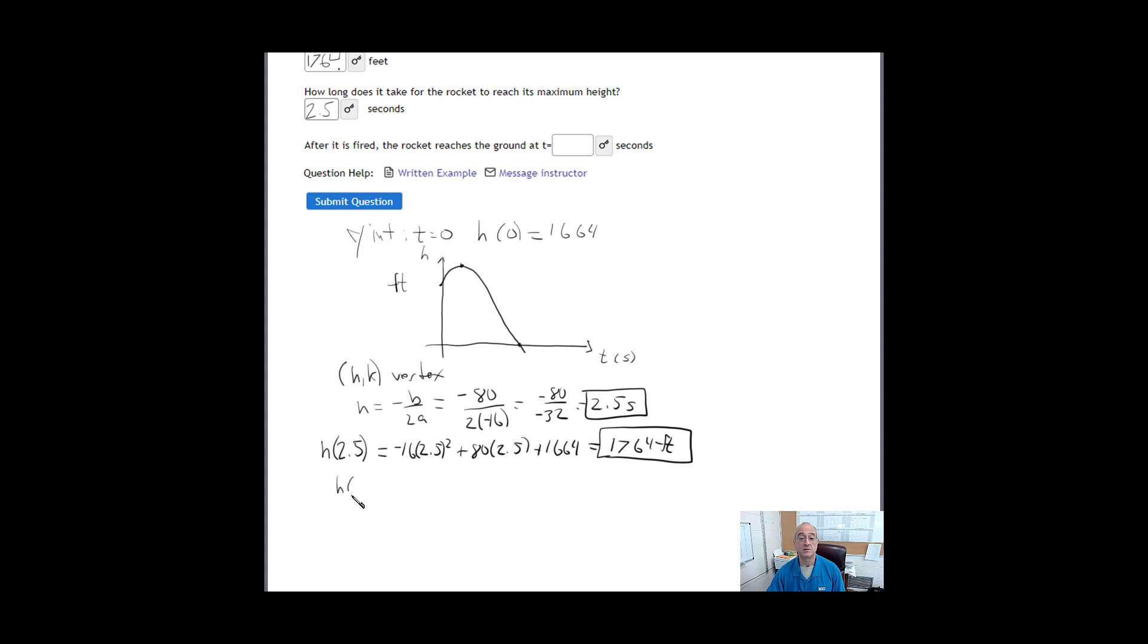So to find the x intercept, we set the function h of t equal to 0. So in other words, negative 16t squared plus 80t plus 1664 equal to 0. Now, obviously, this is a quadratic equation, so we're going to use the quadratic formula to solve for t. So t equals negative b plus or minus the square root of b squared minus 4 times a times c, all over 2a.